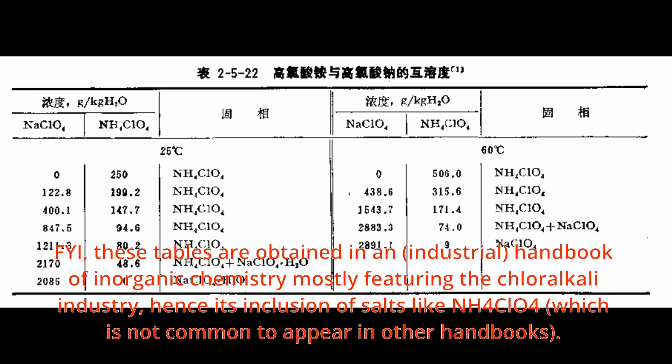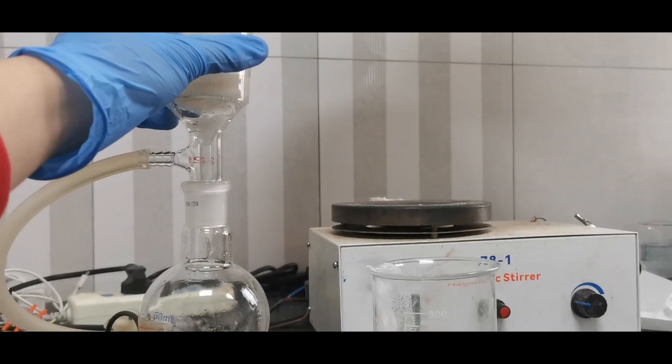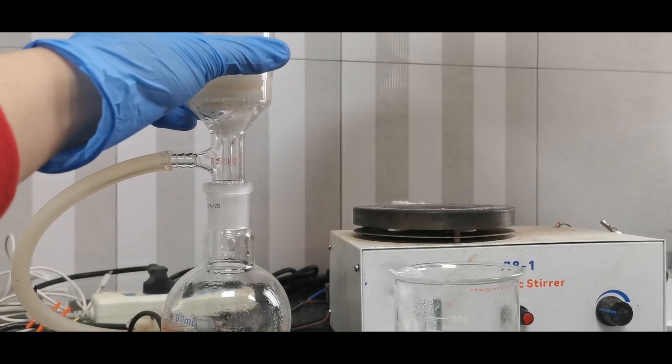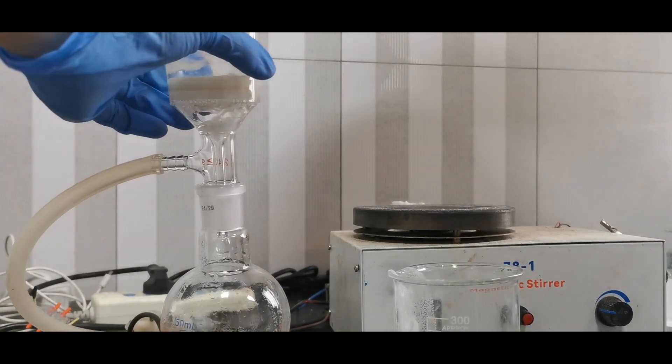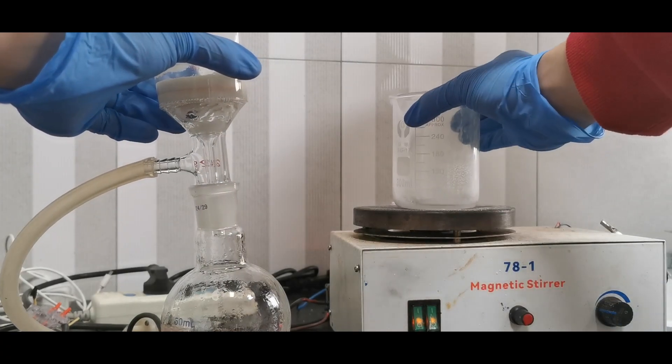To minimize this, I put a watch glass on the beaker to minimize loss of water vapor, as a decreased amount of water may increase the amount of ammonium chloride in the product. After around half an hour of boiling, I quickly suction-filtered the mixture to remove the sodium chloride. Suction filtration is necessary here, as the ammonium perchlorate quickly crystallizes when the temperature starts to drop.